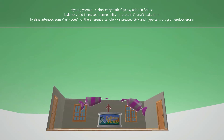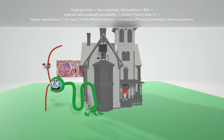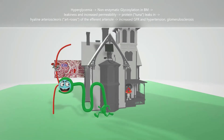This glycosylation leads to leakiness and increased permeability in the walls of the blood vessels. Specifically, protein leaks into the wall of the blood vessel, represented by this tuna going up through the basement wall. This results in hyaline arteriosclerosis, which preferentially affects the efferent arteriole more than the afferent arteriole.